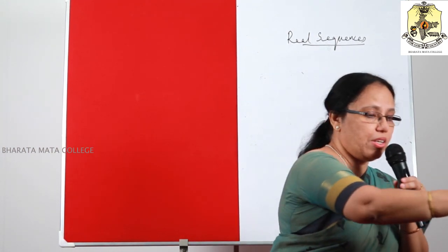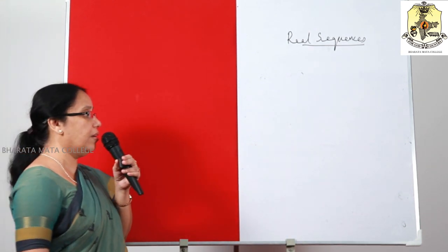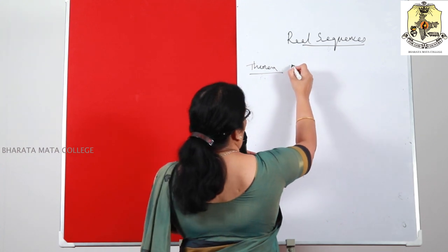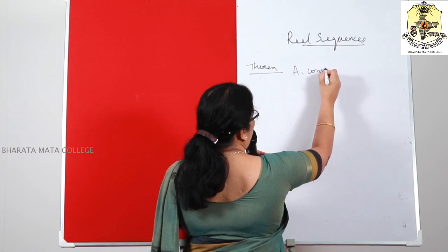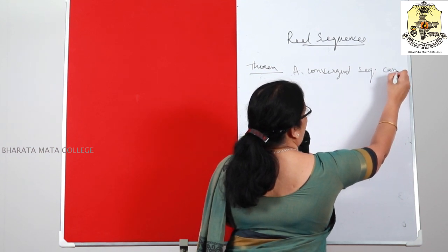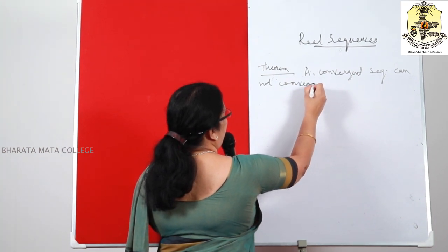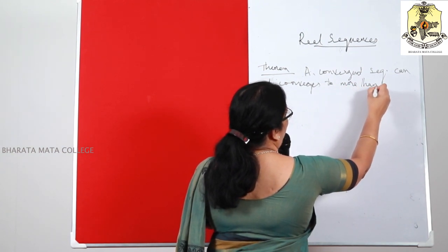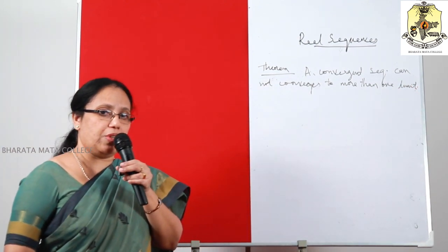The first characteristic is: a convergent sequence converges to a unique limit — it cannot converge to more than one limit. So we have the theorem: a convergent sequence cannot converge to more than one limit.